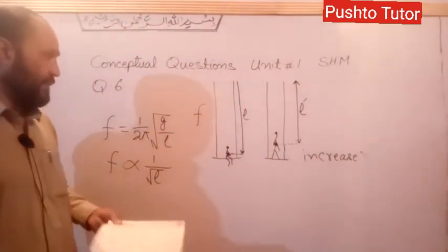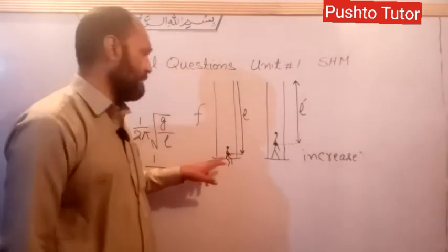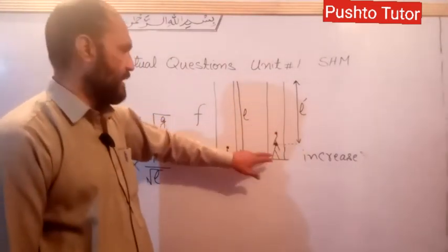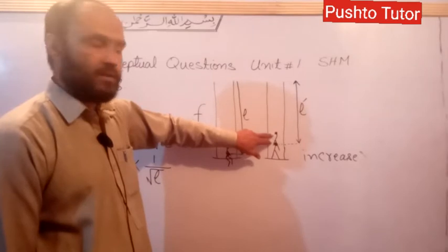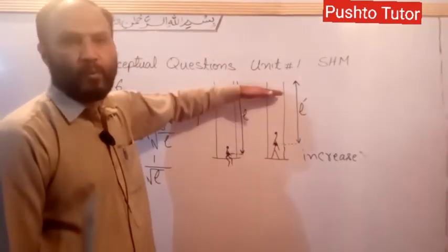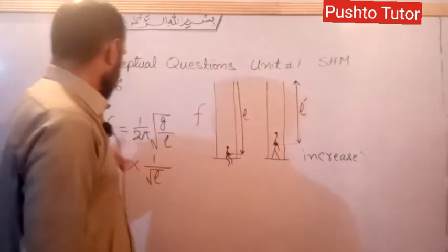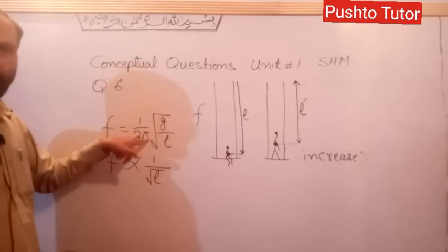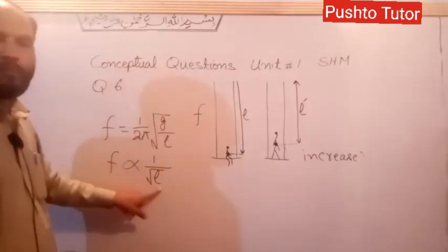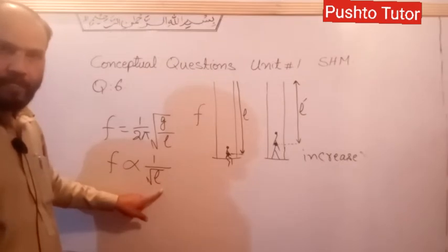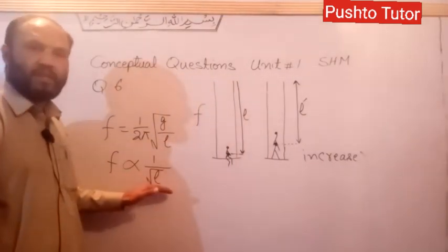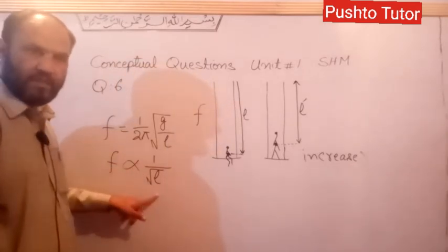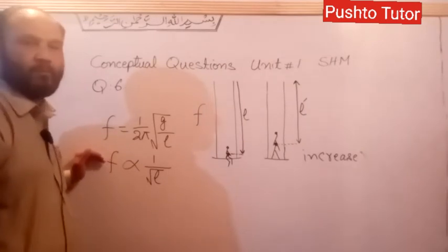The answer is that instead of sitting in a swing, when a person stands in the swing, the length of the pendulum will decrease. According to the relation f = 1 over 2π times the square root of g over L, the frequency is inversely proportional to the length of the pendulum. So decreasing the length means the frequency will increase.